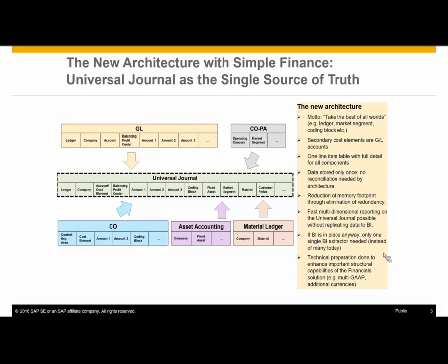The universal journal is the one table that stores all transactional data from the former general ledger, management accounting, asset accounting, and material ledger. From a management accounting point of view, there are two types of journal entry in the universal journal. The first type covers payroll costs, material expenses, revenue postings, and so on, where the CO account assignment is an extension of the journal entry — posting to a GL account whose master data has been extended to include settings for a primary cost element.